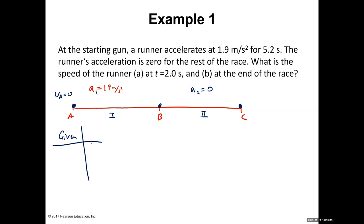Always read the problem fully, then read it again and write down what's given — some information is direct, some indirect. Directly given: the object starts from rest, so initial velocity at A equals zero. Acceleration from A to B is 1.9 meters per second squared. And the time from A to B equals 5.2 seconds.